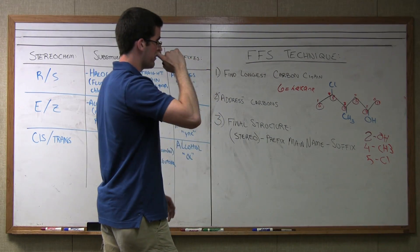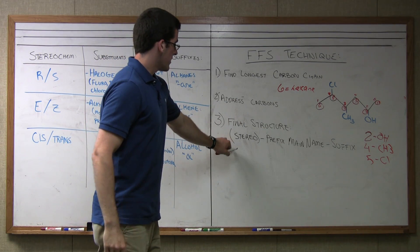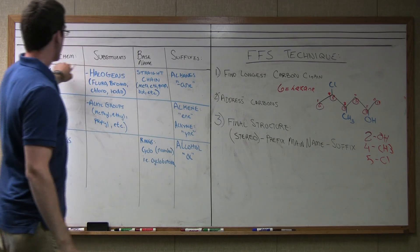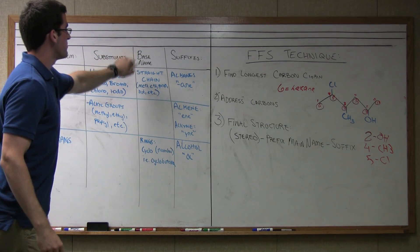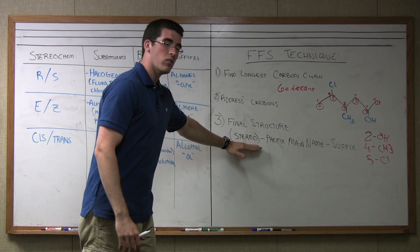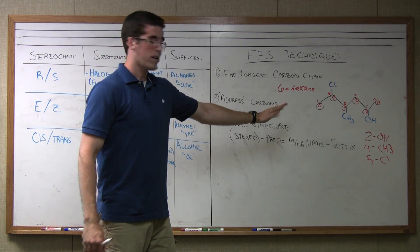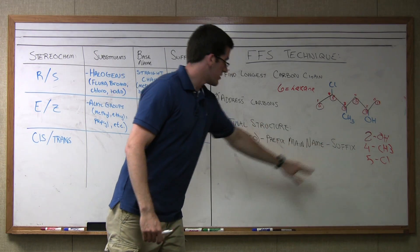Now that I've addressed my carbons, I'm going to put them into the final structure. The final structure has four sections, as laid out here: stereochem, substituents, base name, and suffixes. We have stereo, which was referenced in the last lecture, and there's no stereo here right now. Then we go into our prefixes, our main name, and our suffixes.